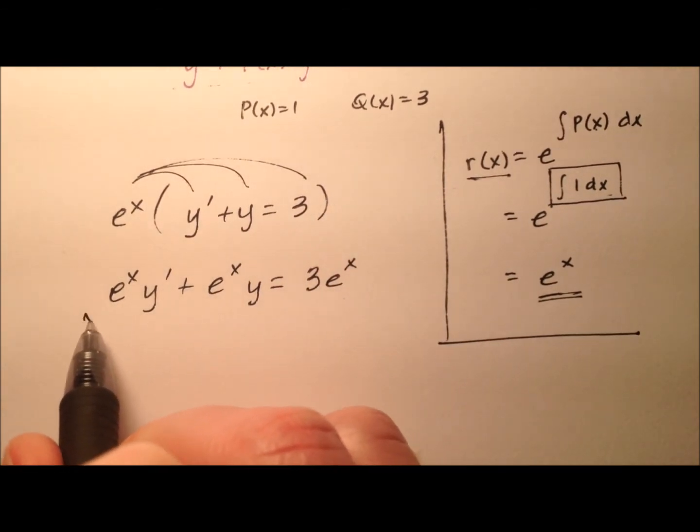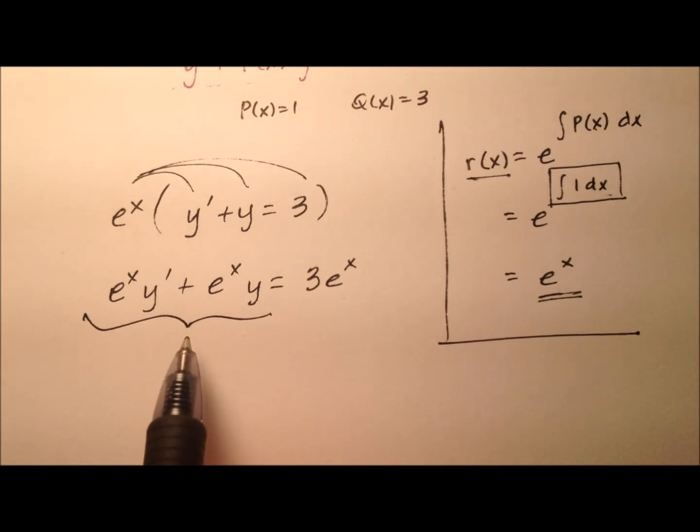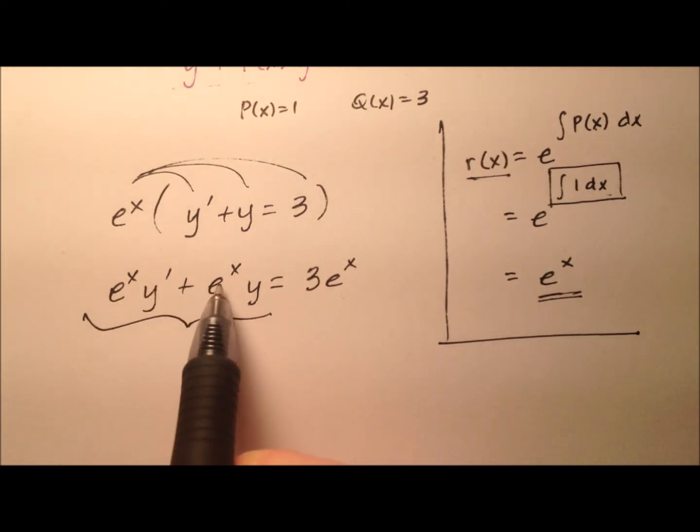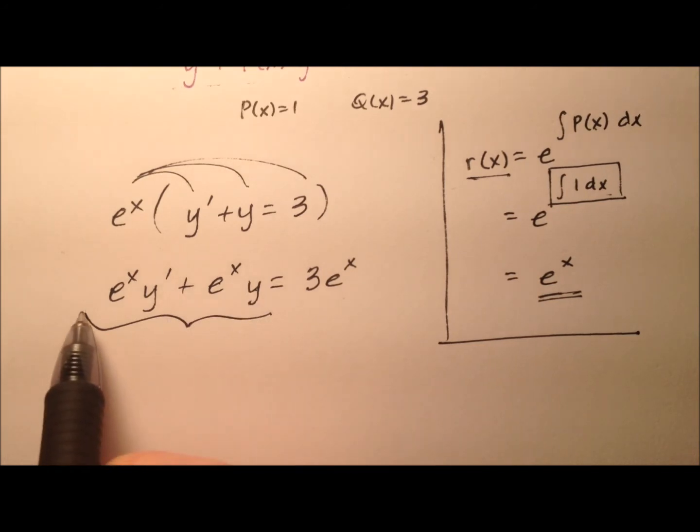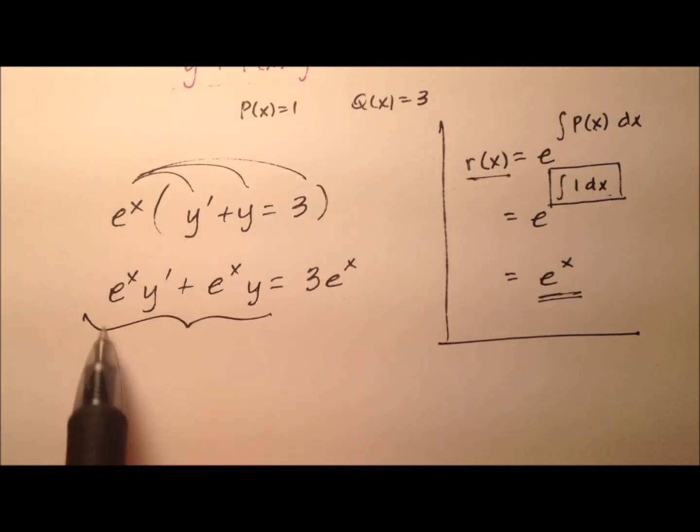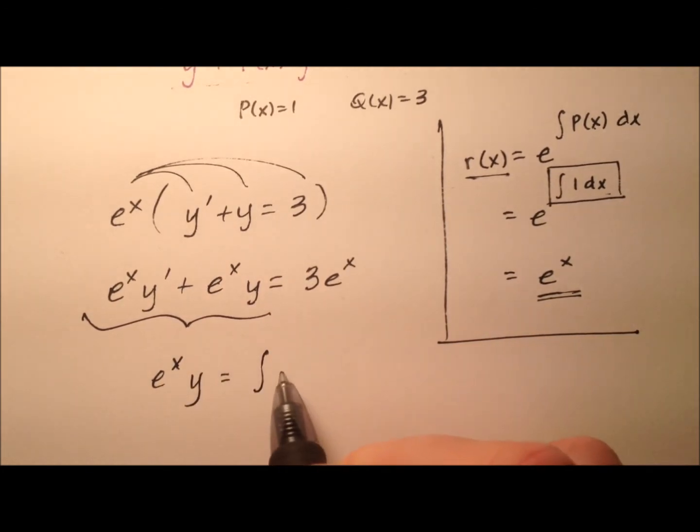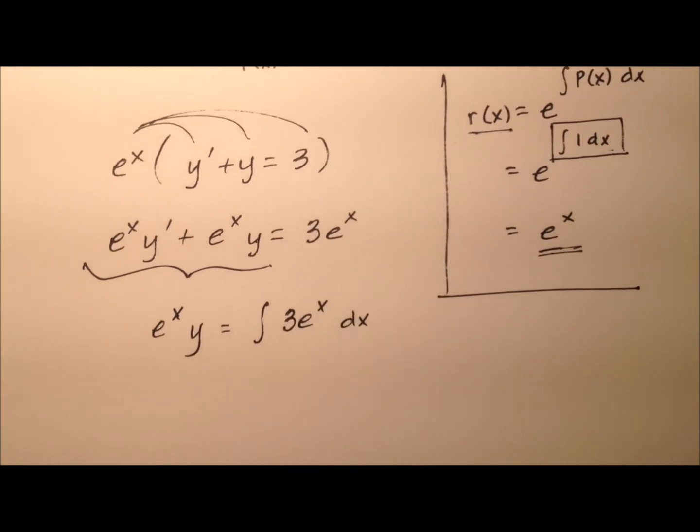The reason we do it this way with our integrating factor is because this left side looks like the derivative using the product rule. We have e to the x y prime and then e to the x y. When I integrate from this product rule I'm going to end up with e to the x y, and that's going to equal the integral on the right side of 3e to the x with respect to x.